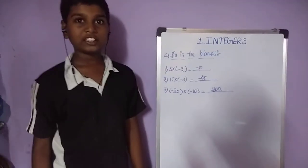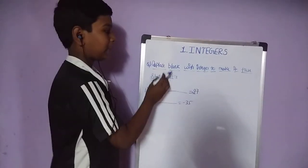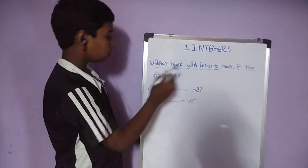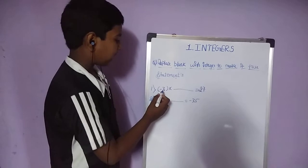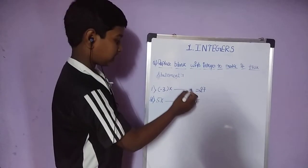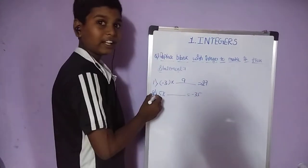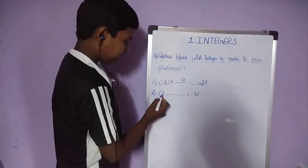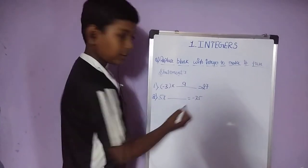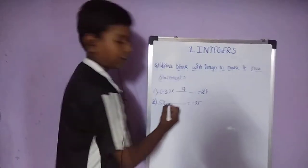Next problem: replace the blank with an integer to make it a true statement. First: minus 3 into dash is equal to 27 — answer is 9. Second: 5 into dash is equal to minus 35 — 5 into 7 is equal to 35, so the answer is minus 7.